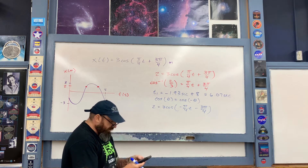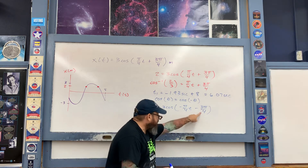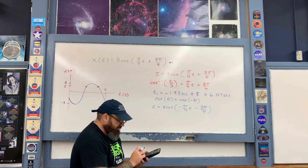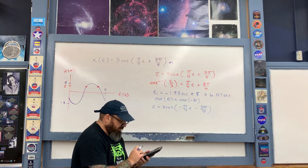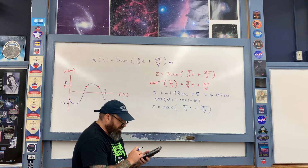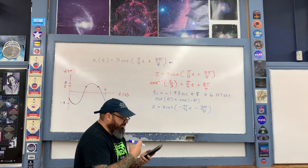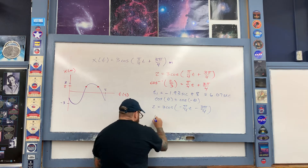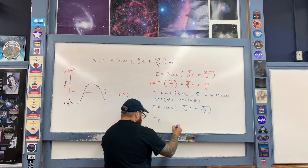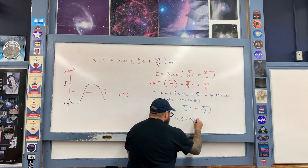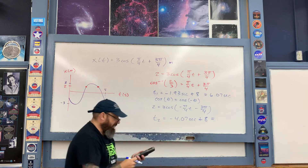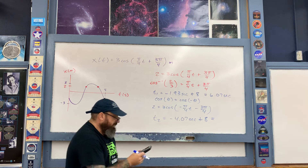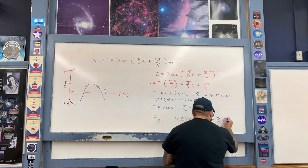Distributing the negative sign through the function, I do the remainder of the algebra: divide by 3, take the inverse cosine of both sides, add 3π/4 to the other side, cross-multiply with the negative sign times 4, then divide by negative π. This gives negative 4.07 seconds, so I add 8 seconds to get t2 = 3.93 seconds.